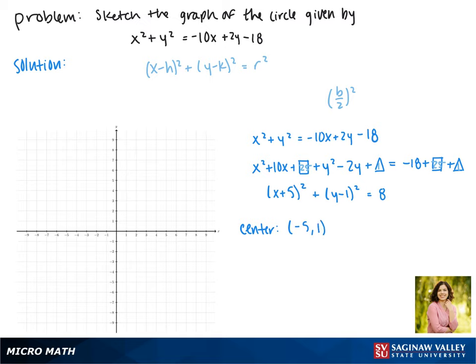And now we can find the radius. Since the radius is r and here r squared equals 8, that means that our radius is the square root of 8. As a decimal this is about 2.828.